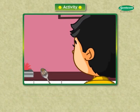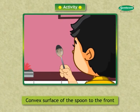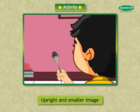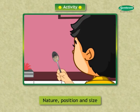What changes do you notice in the image? We can see an upright and smaller image. The nature, position, and size of the image formed depend upon the distance of the object from the surface.